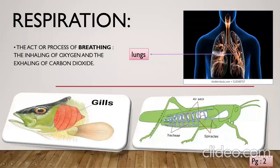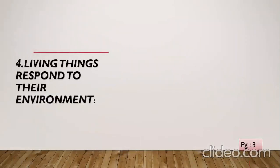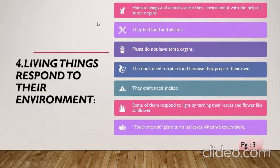This is how animals respire and get the energy because they need oxygen. The fourth feature: living things respond to their environment. All the living things respond to their environment. If you talk about human beings and animals, they sense their environment with the help of their sense organs. How many sense organs do we have? Five — eyes, nose, ear, tongue, and skin. These are our five sense organs through which we sense our environment.